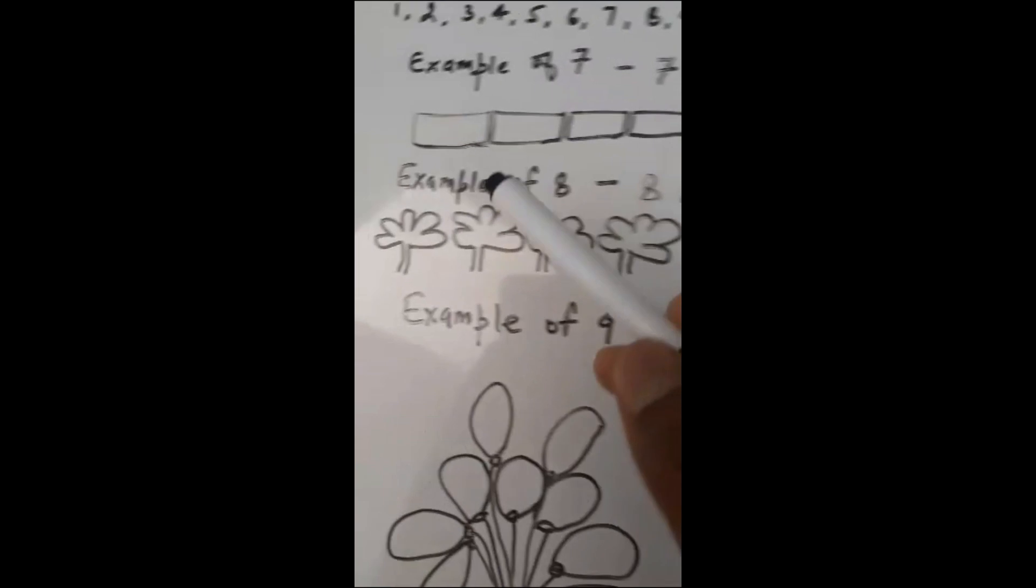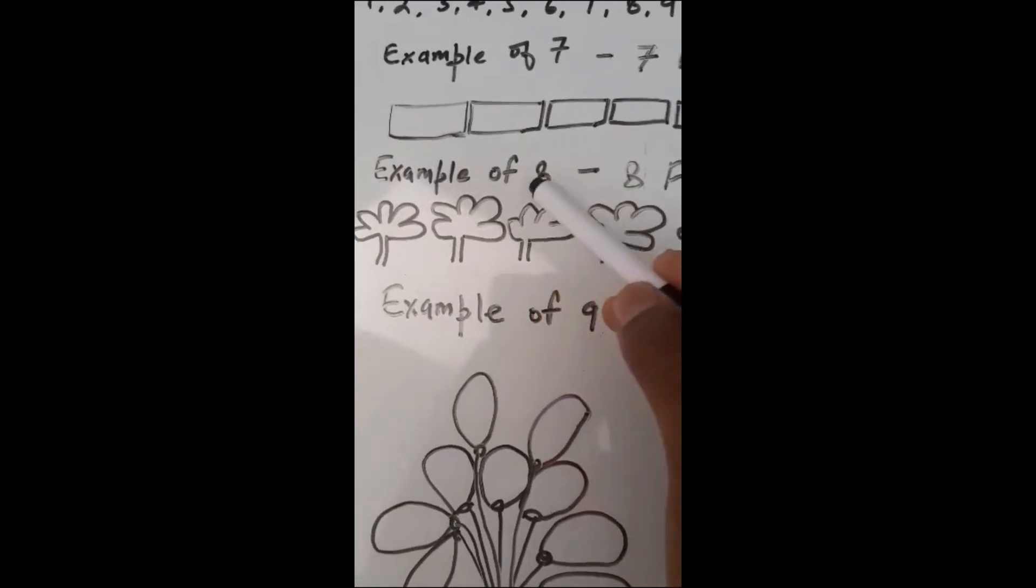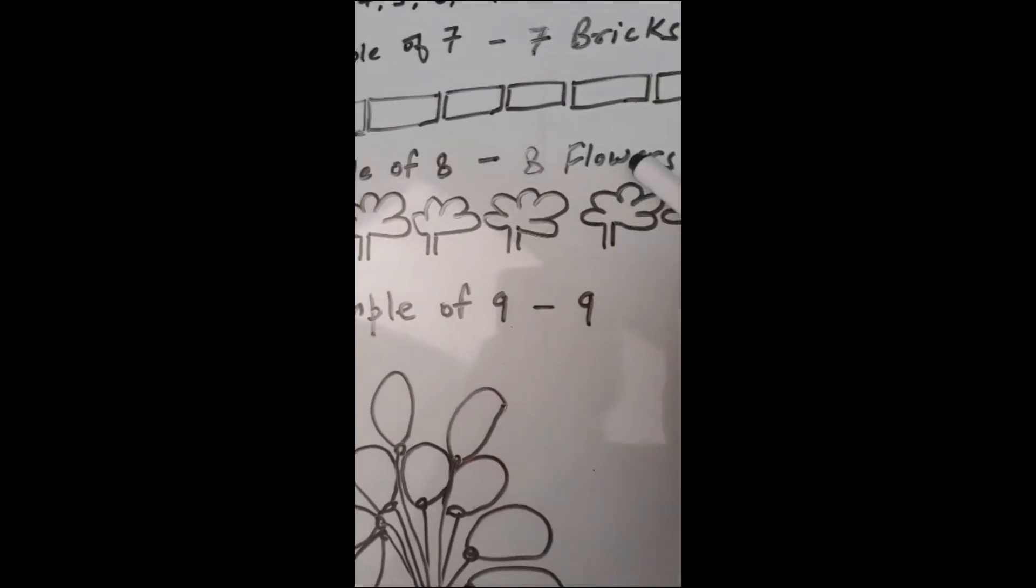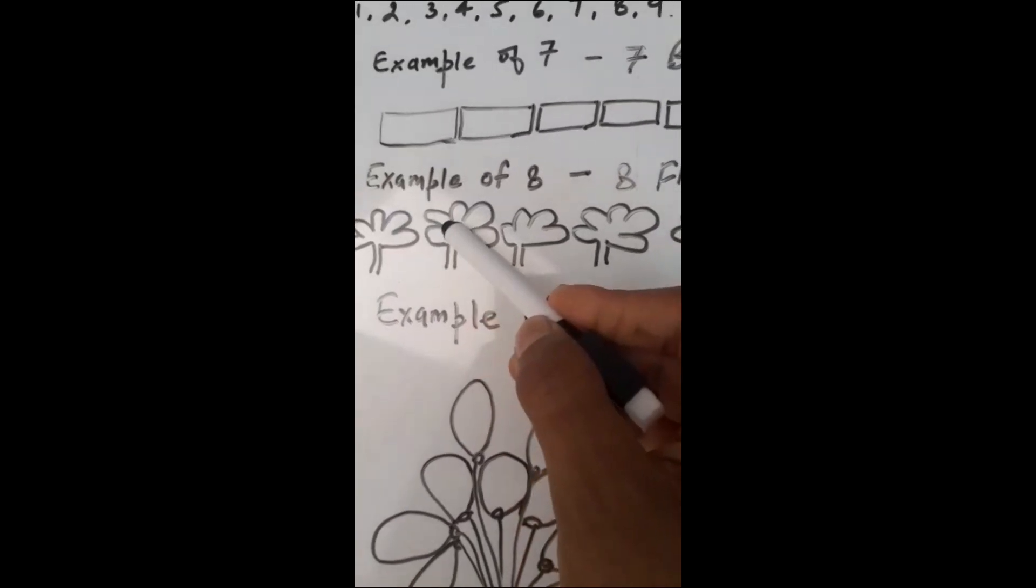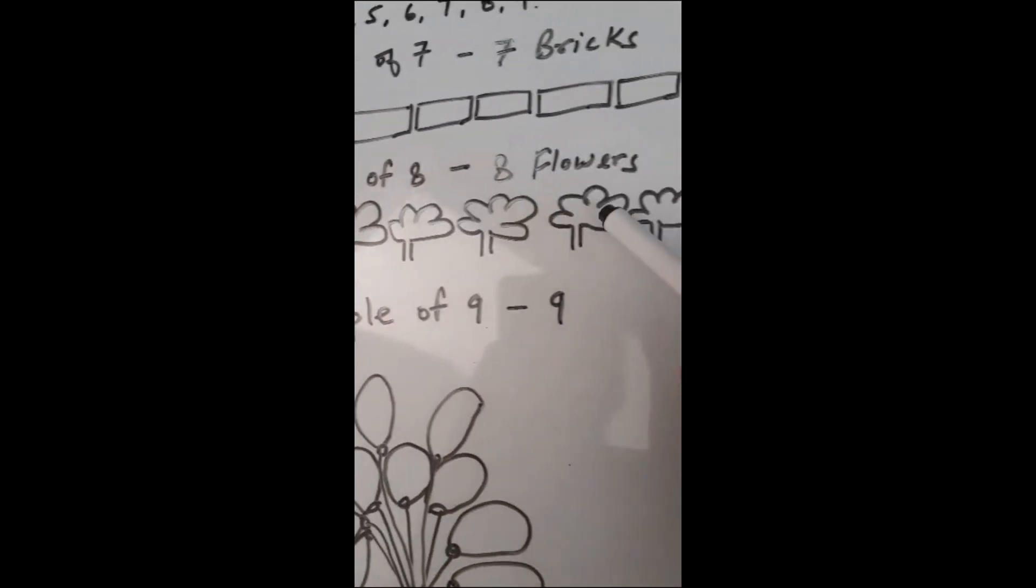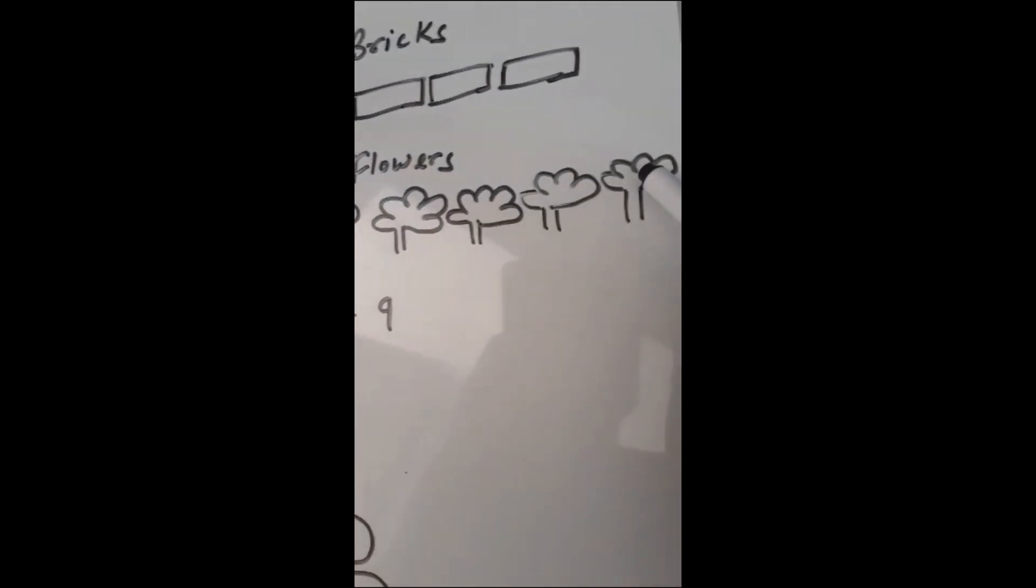Then you see example of 8, so 8 flowers: 1, 2, 3, 4, 5, 6, 7, and 8.